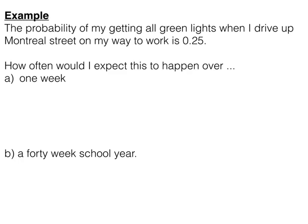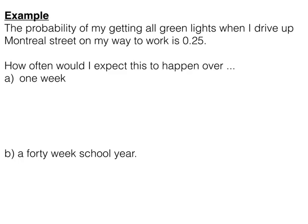So let's take a look at a slightly more interesting example. When I drive to work, I come up Montreal Street. Montreal Street's a one-way street, so in theory if you get a green light at the start of the street, you should get green all the way up. It doesn't quite work out that way, and let's say for the sake of the argument that I've managed to work out the chances of my getting all green lights is 0.25.